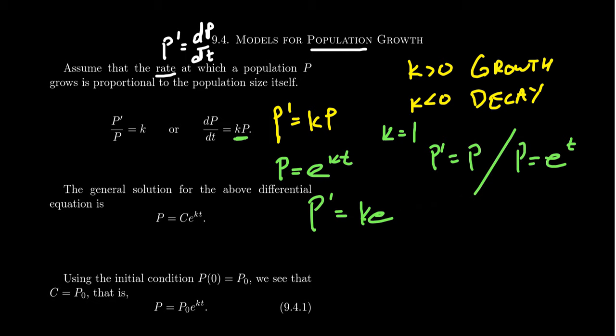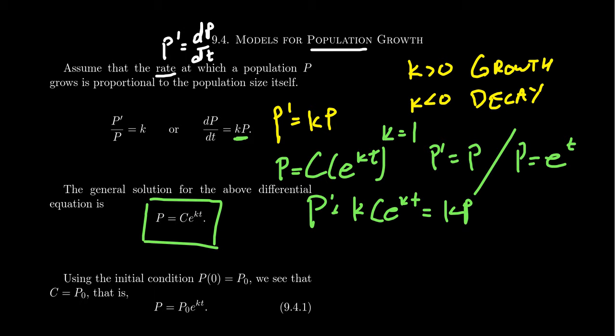But by derivative rules as well, we could take any constant multiple of E to the KT and its derivative would be KC E to the KT, which is just going to be K times P again. And so we see that the general solution to this very simple differential equation is going to be P equals C times E to the KT.